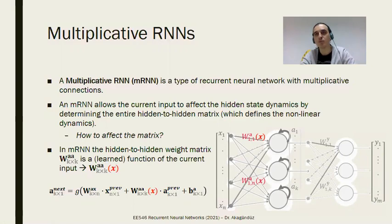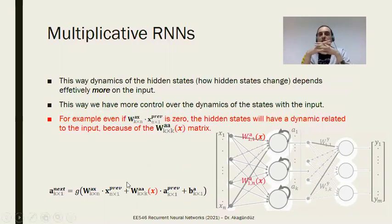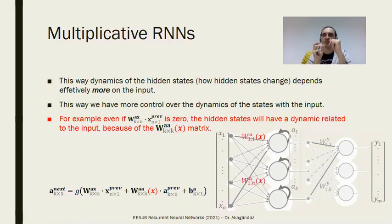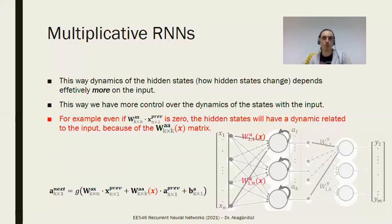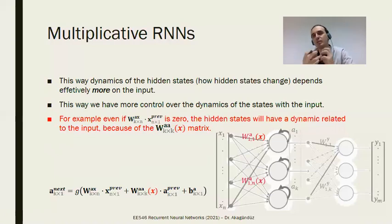During gradient descent backpropagation, the dynamics of the hidden states now depend more effectively on the inputs. That's the whole idea of a recurrent neural network — you affect the inputs so that it changes the hidden state. You make that relation more complex, and making it more complex increases your capacity. By increasing your capacity you could learn what you weren't able to learn before — we simply have more control of the dynamics of the states.